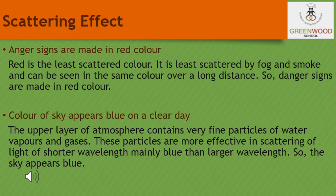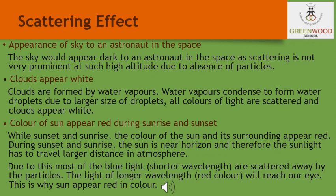Why are danger signals always red in color? Because red is the least scattered by fog or smoke, as it has the longer wavelength, and therefore it can be seen in the same color at a distance. Similarly, the sky appears dark to an astronaut in space because scattering is not very prominent at such high altitude, due to the absence of particles in the atmosphere there.